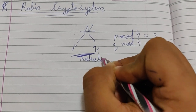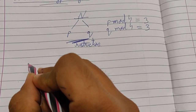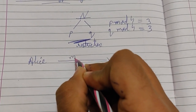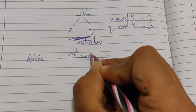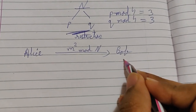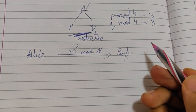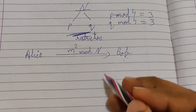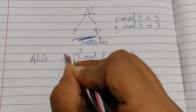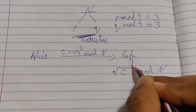This restriction in the Rabin cryptosystem must be followed, or else it is not possible to solve further. When Alice sends a message to Bob, she encrypts it as M squared mod N. Bob then recovers the message by computing the square root of C, i.e., √C mod N.